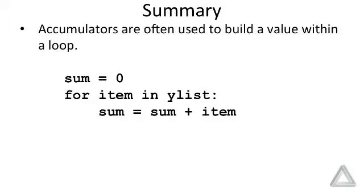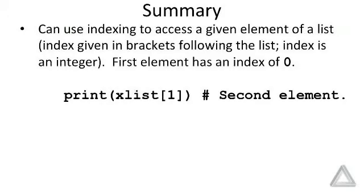Now we mentioned that we can use indexing to access a given element of a list. The index is given in brackets following the list. The index is an integer, or some expression that returns an integer, and the first element has an index of zero.